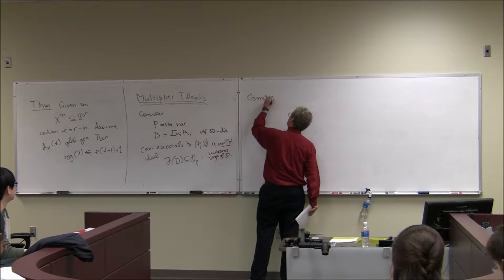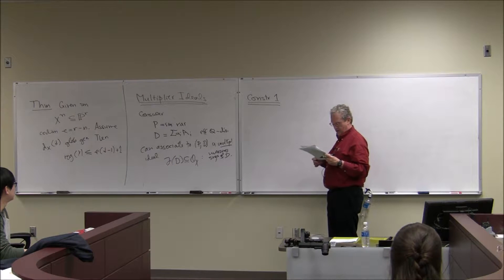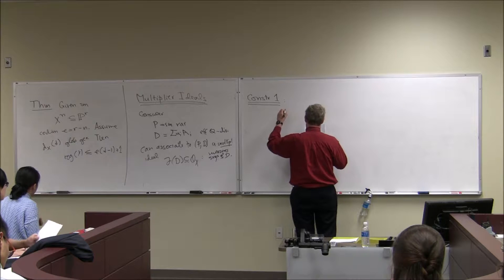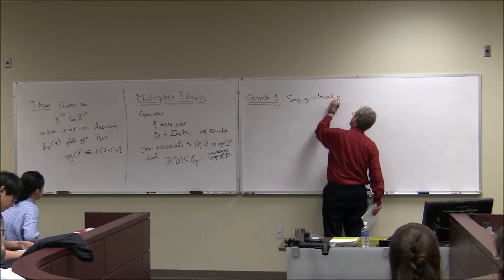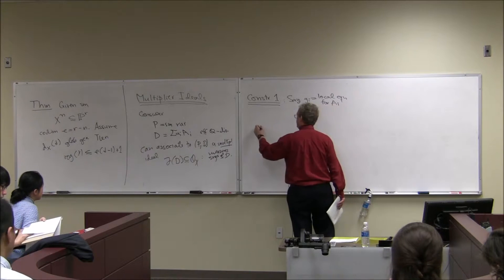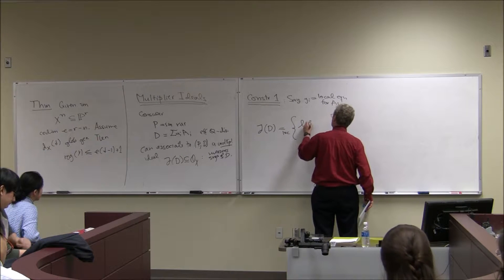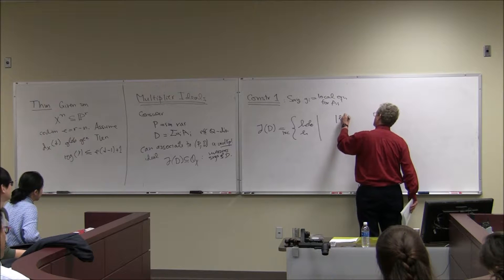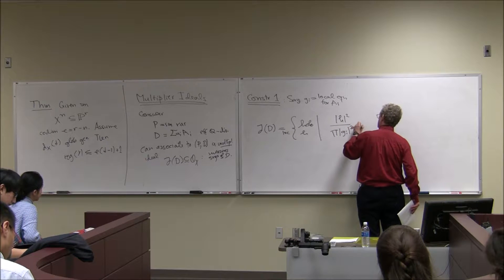Let me give two constructions. Construction one is a good way to think about the definition, but it's not so useful for actual computation. We have hypersurfaces A_i, and we let g_i be a local defining equation for A_i. Then locally the multiplier ideal is the set of all holomorphic functions H such that |H|^2 divided by the product of |g_i|^{2a_i} is locally integrable.